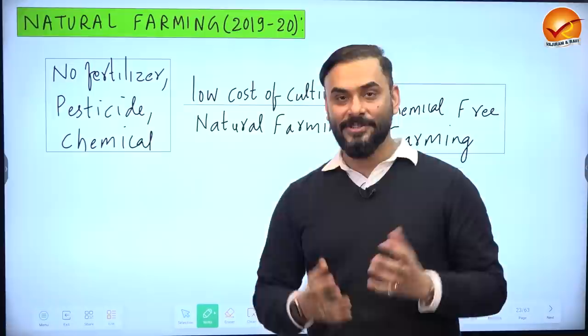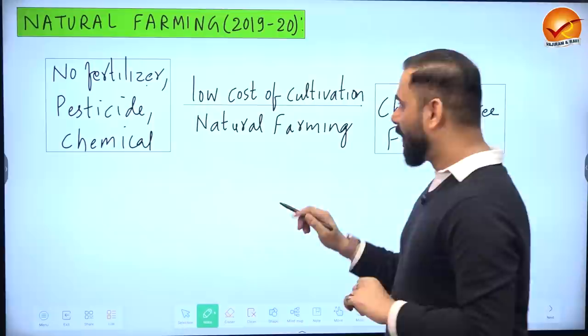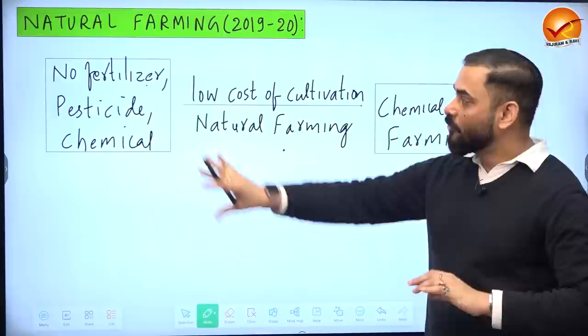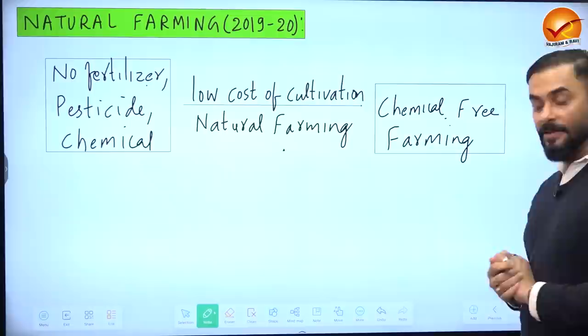Natural farming means no fertilizer, pesticide, or chemical is used. When you eliminate these inputs, the cost of cultivation also comes down. The product becomes chemical-free. This is called natural farming — also known as Zero Budget Natural Farming because the cost of cultivation drops significantly when artificial inputs are removed.